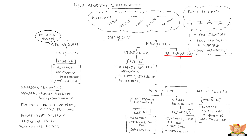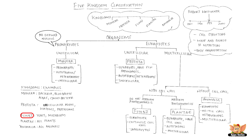Fungi are multicellular organisms with cells having cell walls, and they do not perform photosynthesis. They are eukaryotes, described as saprophytes because they use decaying organic material as food — this is their mode and source of nutrition. They have cell walls made of a tough complex sugar called chitin. Yeast and mushroom are a few examples of fungi.